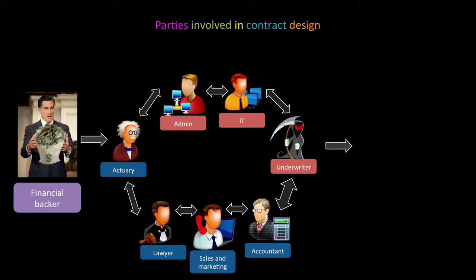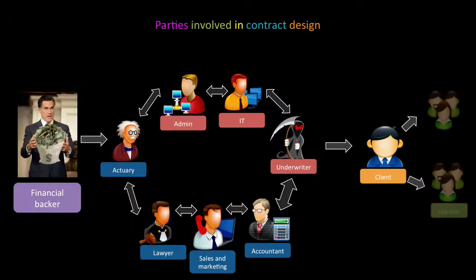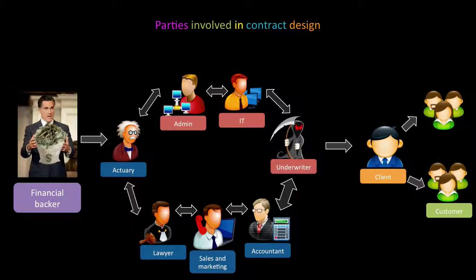After these stakeholders have made the product, we give it to the client, and the client might very well have customers or clients of their own. In life insurance, the client is an independent financial advisor and the customers are policyholders. In general insurance, the client is the employer and the customer is the employee. In reinsurance, the client is the insurer and the customers are the policyholders. In pensions, the client could be the sponsor and the client's customers could be the members.